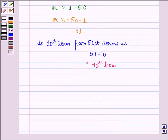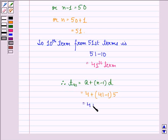So T_41 equals a plus (n minus 1) times d. That is equal to 4 plus (41 minus 1) times 5, that is equal to 4 plus 40 times 5.